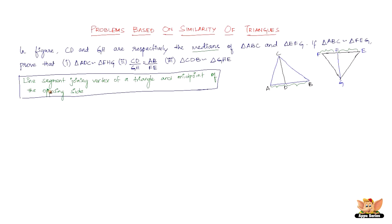Now because of the medians present here, we can write that 2AD equals AB — that is, 2 times AD equals the full length AB — and 2FH equals FE for the second triangle.